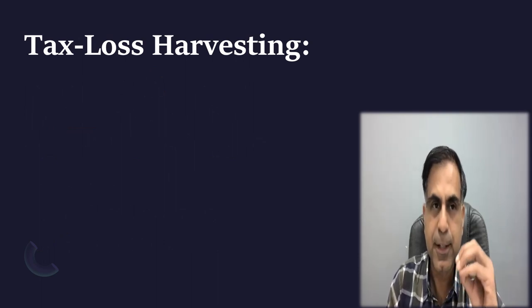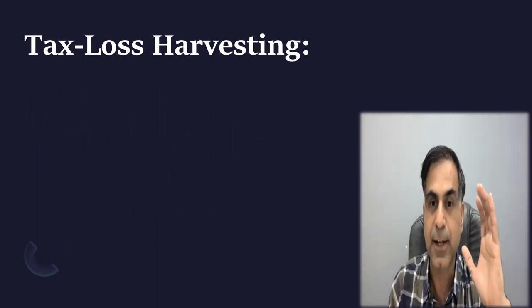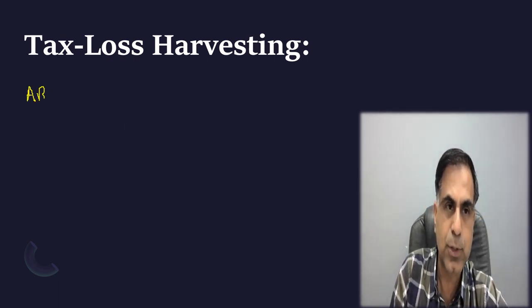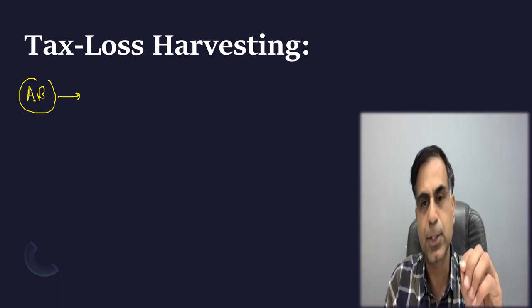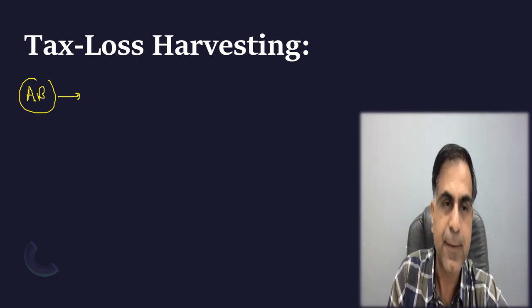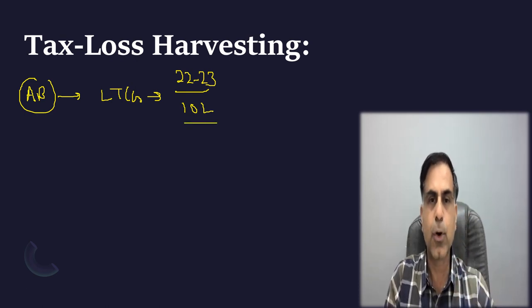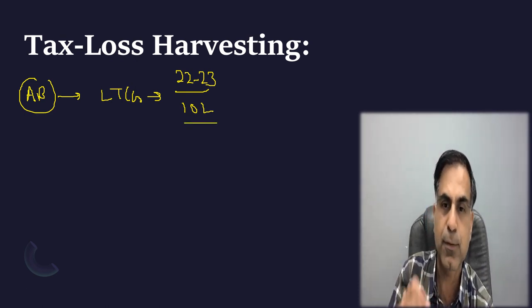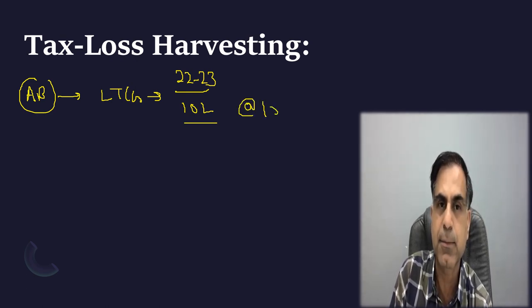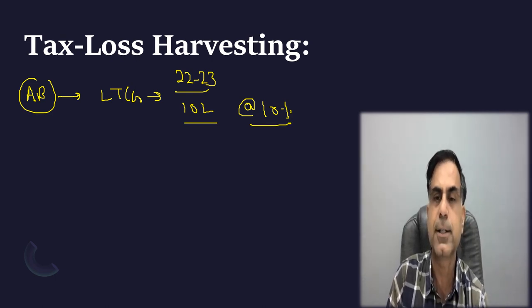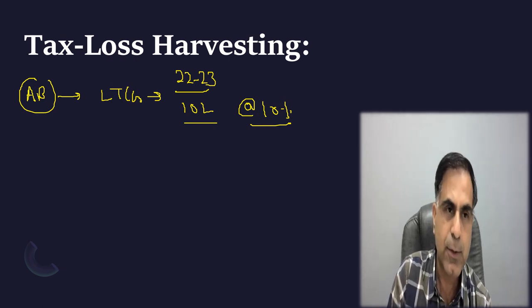Let me begin with tax loss harvesting. Suppose there is a person — Mr. Anubhatiya — who has a long-term capital gain for the current financial year 2022-23 of rupees 10 lakh. You all know that if this long-term capital gain is from the sale of listed securities, then capital gain above rupees 1 lakh will be taxable at 10%. So this year on 9 lakh rupees of long-term capital gain, he has to pay 10%, that is rupees 90,000.